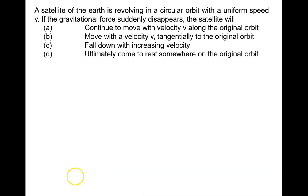For this illustration, a satellite of the Earth is revolving in a circular orbit. Let's say this is the Earth, and the satellite is moving around the Earth in a circular orbit with a uniform speed v. The speed is constant, that is given to us as v.